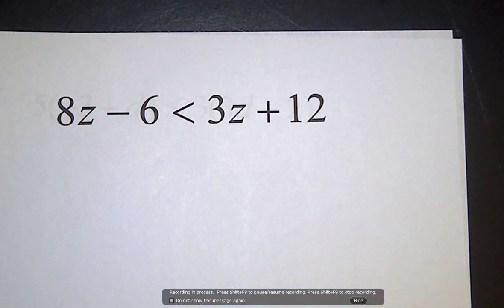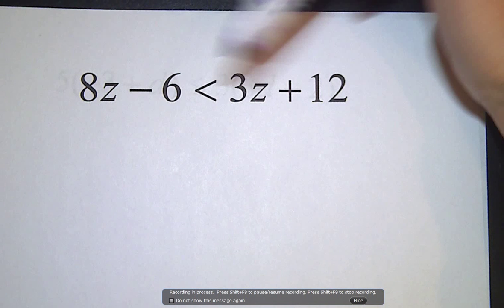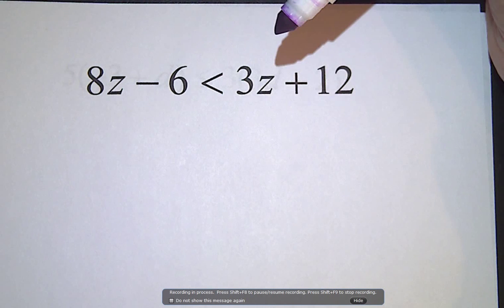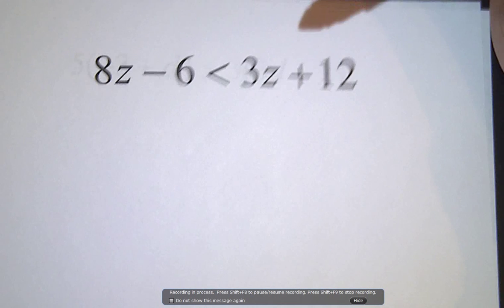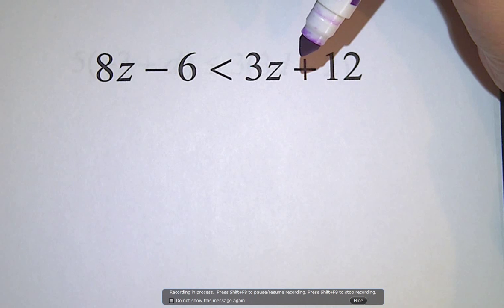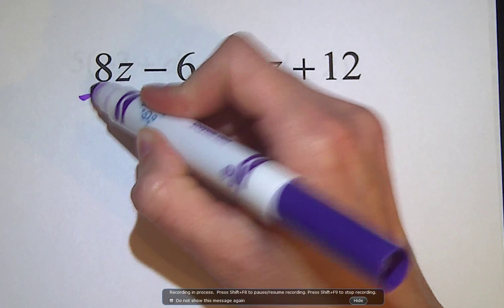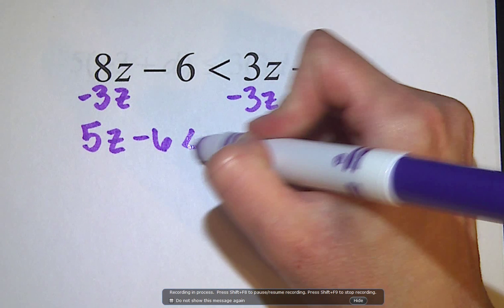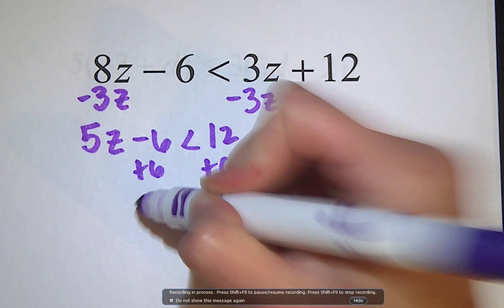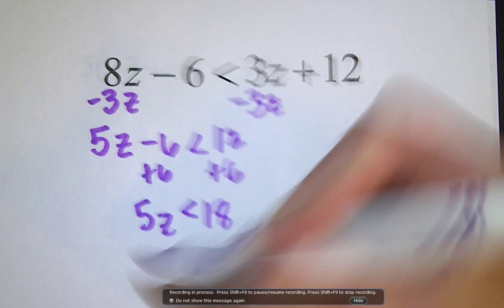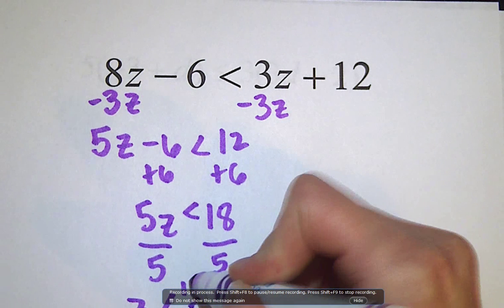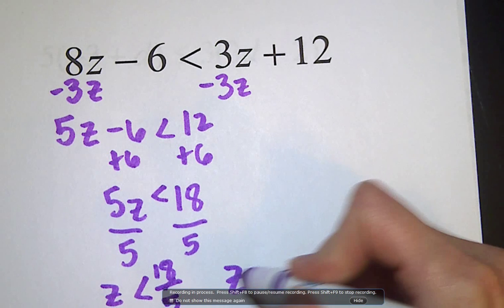Now we've got variables on both sides. I have 8z on one side and 3z on the other. My biggest tip is to always try to keep the coefficient of the variable positive, so you don't have to worry about flipping the sign. I wouldn't subtract 8z because that gives negative 5z. Instead, subtract 3z from both sides, maintaining a positive coefficient of 5z. Then add 6 to both sides, getting 5z is less than 18. Divide by 5, giving z is less than 18 over 5, or 3 and 3 fifths.